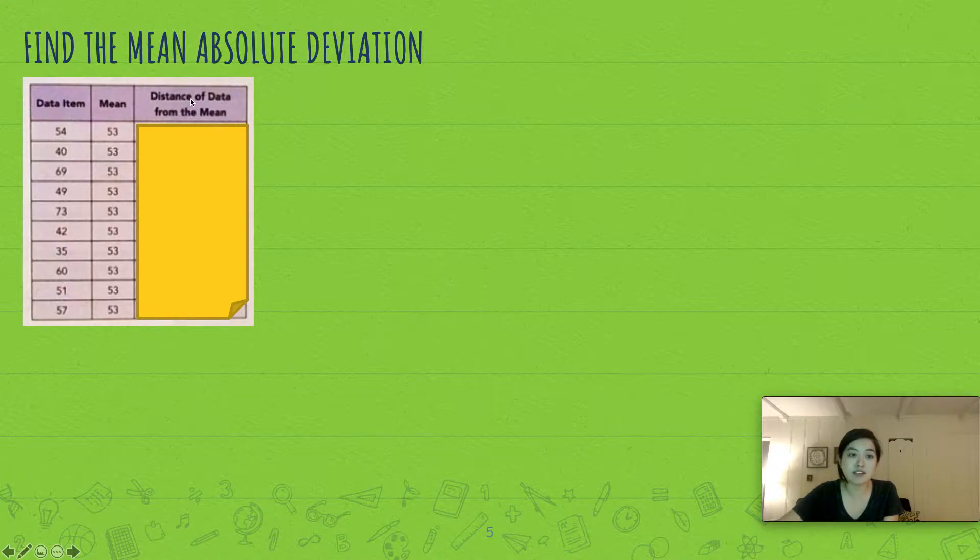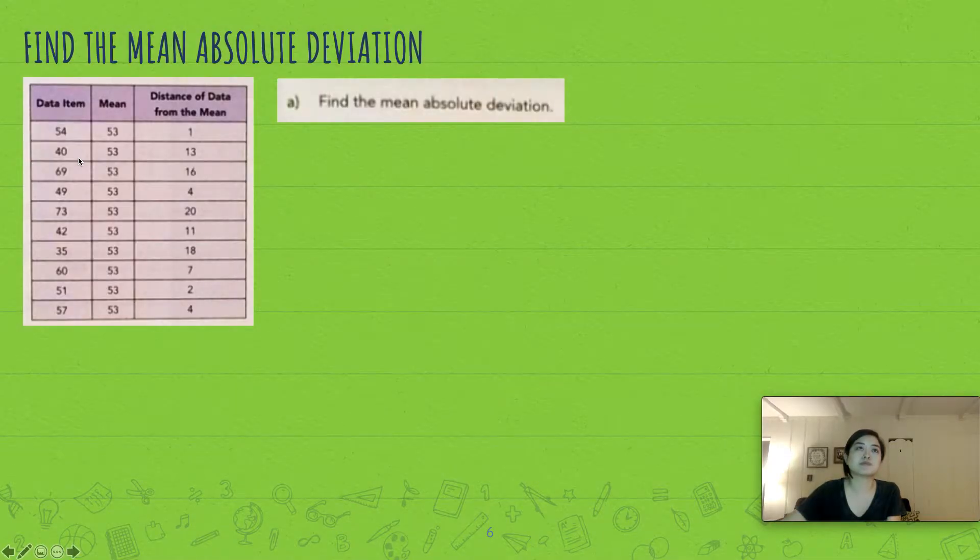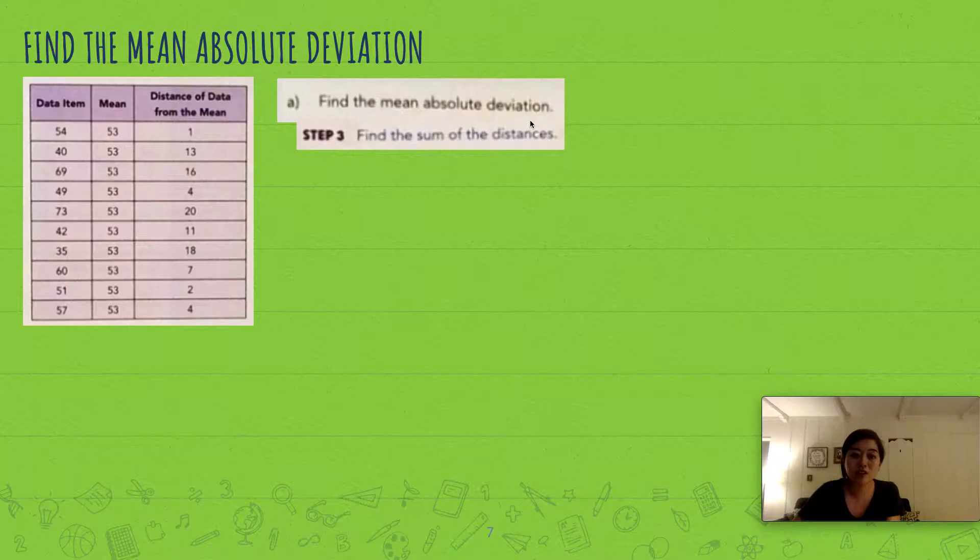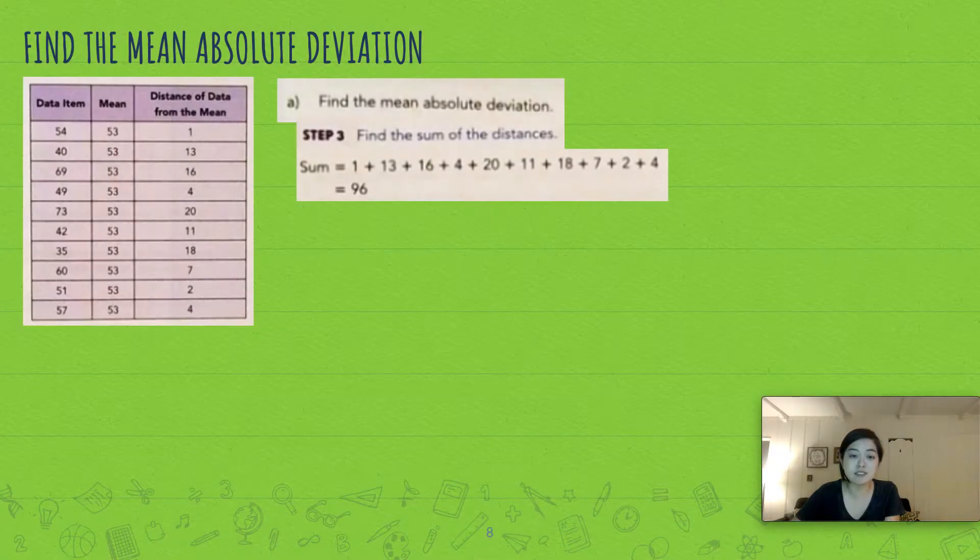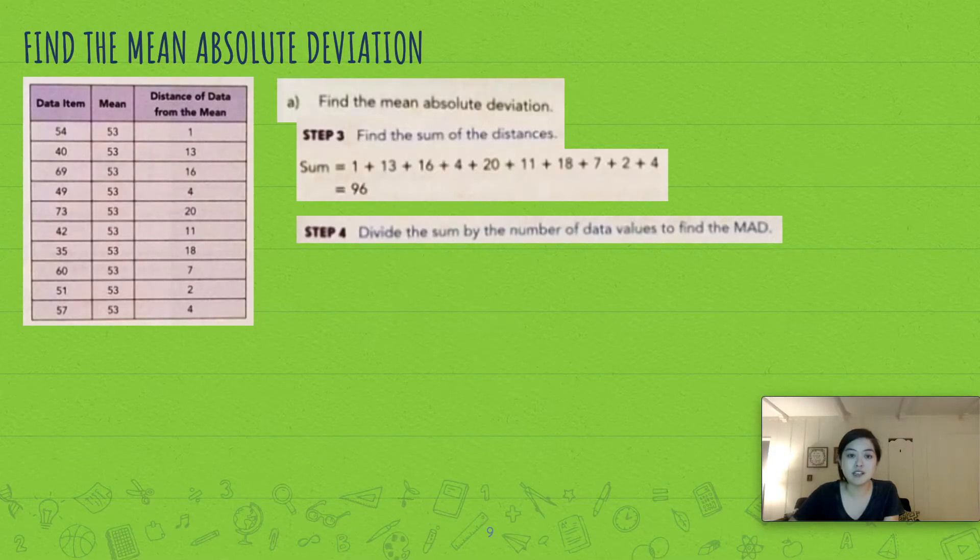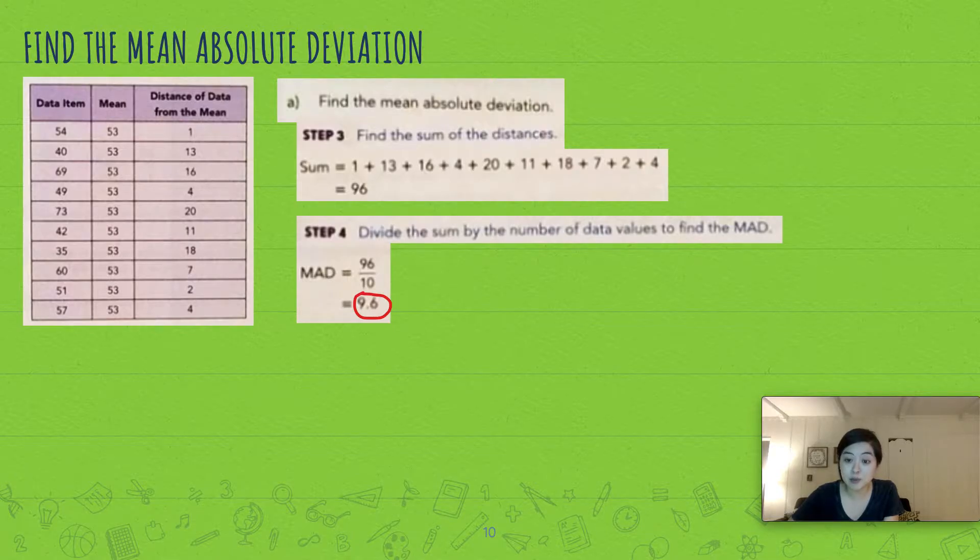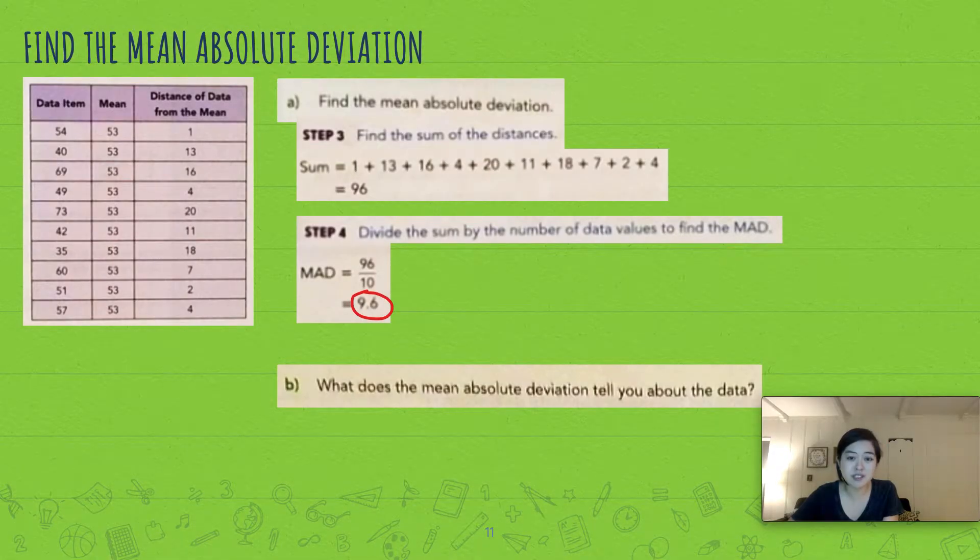Once we find that, we're going to find the distance of the data from the mean. I like to just take the bigger number and subtract the lowest number. Then to find the mean absolute deviation, you need to find the sum of the distances, then divide the sum by the number of data values, and that'll equal 9.6 in this example.